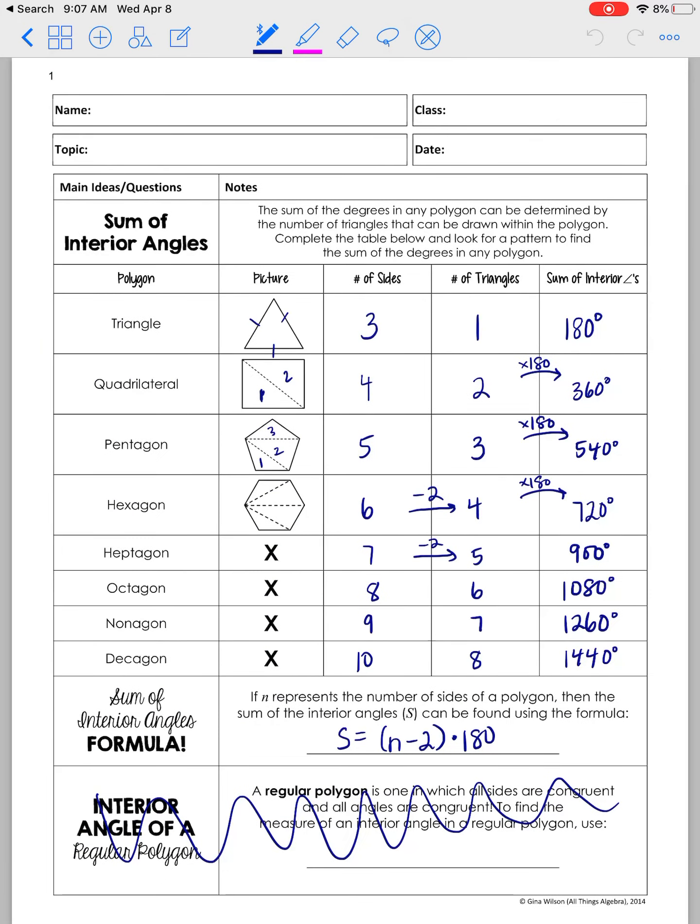So as a reminder, this is what we did in class together. You're able to take the number of sides, subtract 2, get the number of triangles, multiply it by 180, because each triangle has 180 degrees, and then you get the total number of degrees.